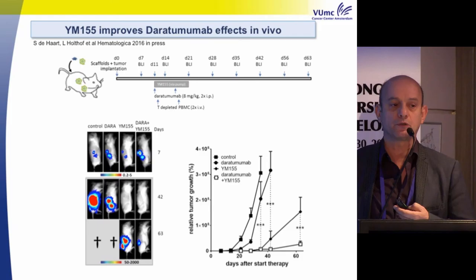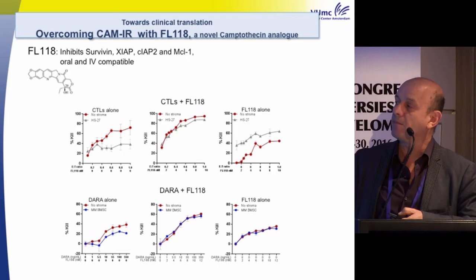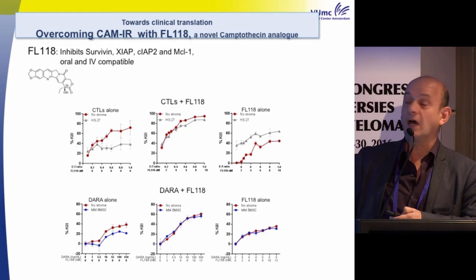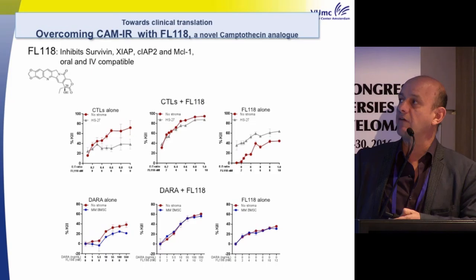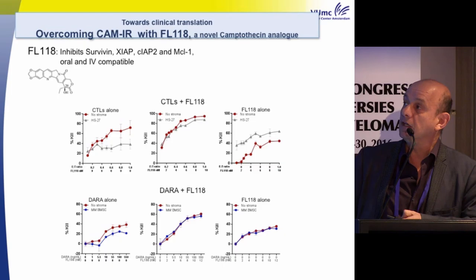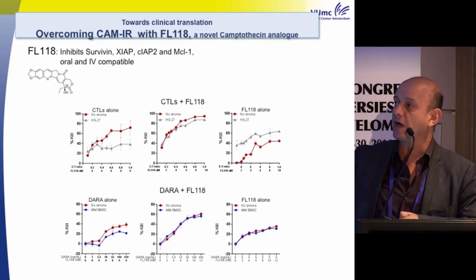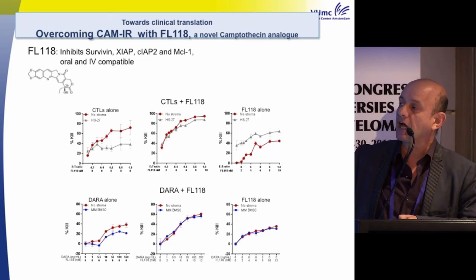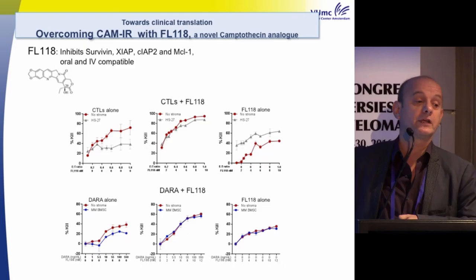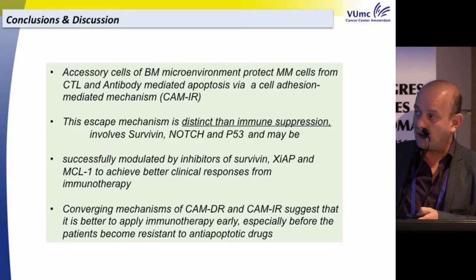Towards clinical translation, we are now using FL118, a new molecule — a camptothecin analog — which inhibits survivin, XIAP, and MCL-1. FL118 acts similarly to YM155 in abrogating immune resistance, synergizing with CTLs as well as with daratumumab to improve the efficacy of these immunological agents.